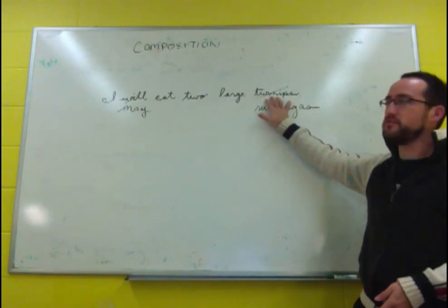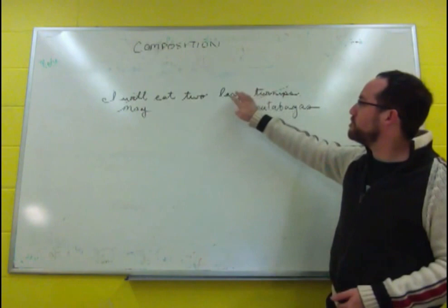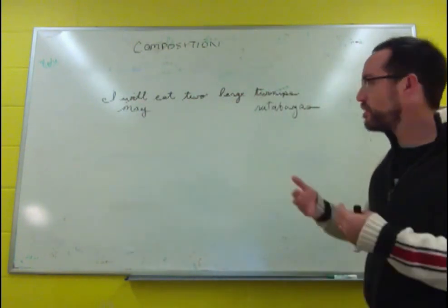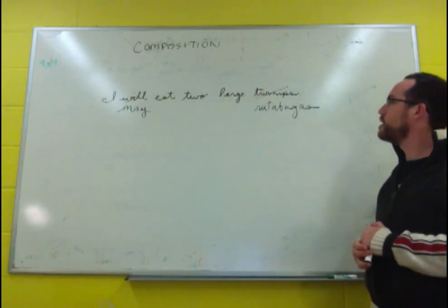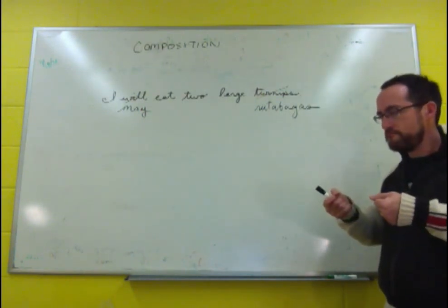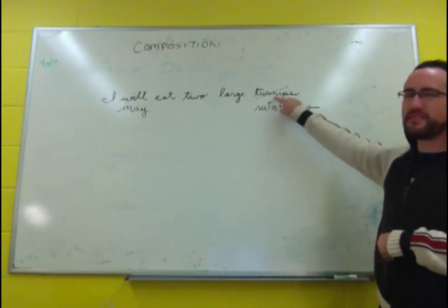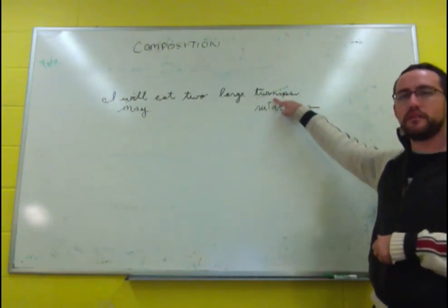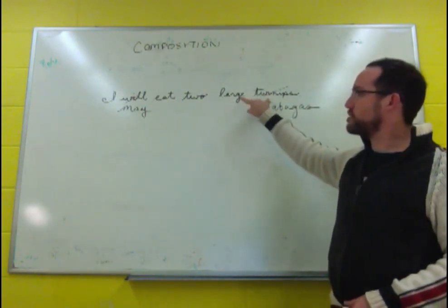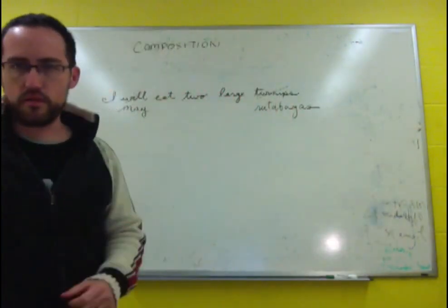It's almost obvious, right? But understanding how the meaning of turnips combines with these other things to make an infinite number of meanings, that will allow us a lot of analytical power. Because now we don't have to know exactly what a turnip is. Now we can just figure out how does turnip combine with large to create large turnip, and how does that combine with two to create two large turnips, and so forth.